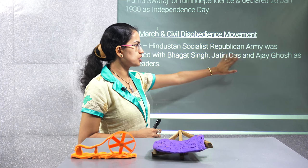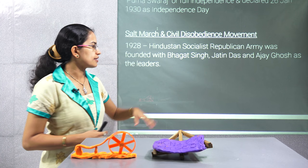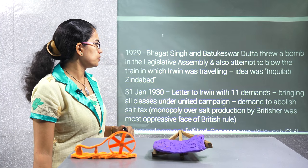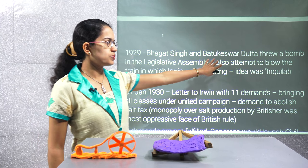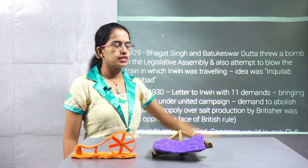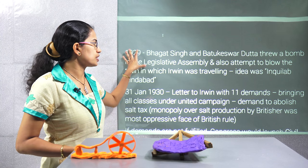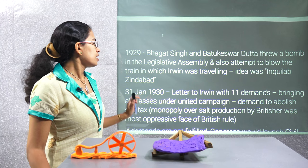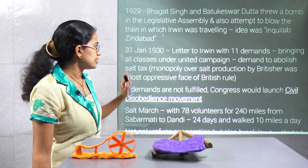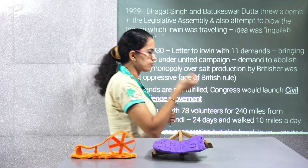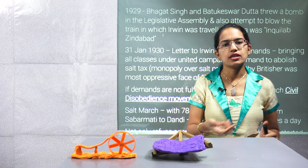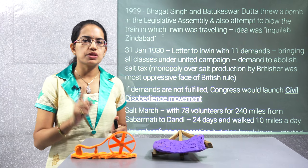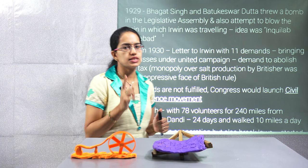The first was the Hindustan Socialist Republican Army, founded by Bhagat Singh, Jatindas, and Ajay Ghosh. Then Bhagat Singh and Batukeshwar Dutt threw a bomb in the legislative assembly. There was also an attempt to blow up the train in which Lord Irwin was travelling. Finally, in 1930, a letter was given to Irwin containing 11 demands, one of which was to abolish the salt tax.